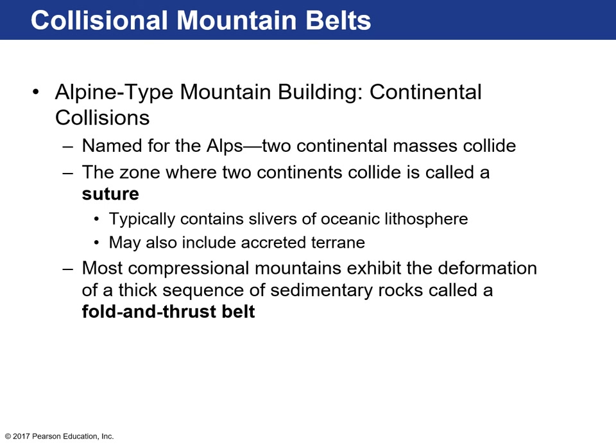Let's move on to alpine-type mountain building — continental collisions. We're not dealing with ocean crust and continental crust subduction; now we're dealing with two continental plates crashing into one another. Where two continental lithospheres collide, the surface of collision is called a suture or suture zone, which typically contains little slivers of ocean lithosphere. A lot of times continental crust has a leading edge of ocean plate ahead of it, initially causing subduction. But then the continental crust runs out of that leading ocean crust, and some ocean crust can get pushed up onto the overriding plate, forming ophiolite complexes — places where ocean crust is obducted onto the continent.